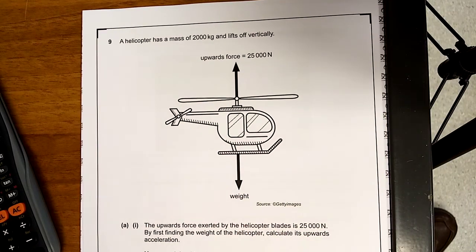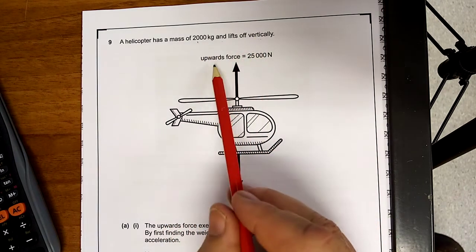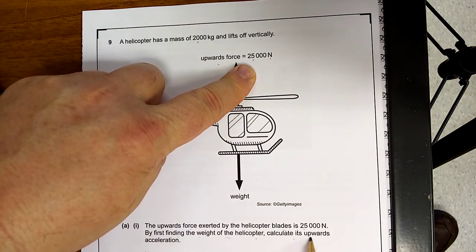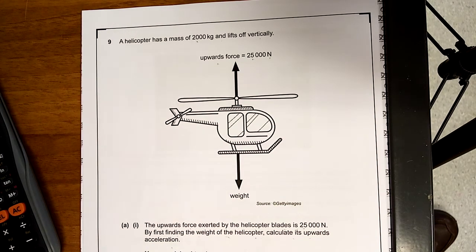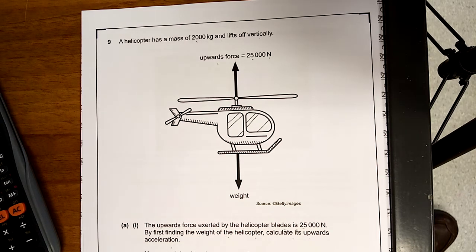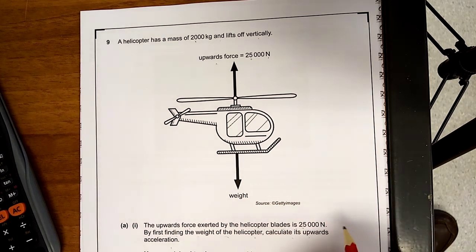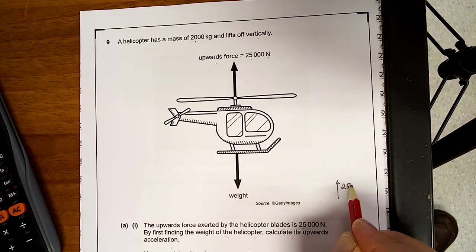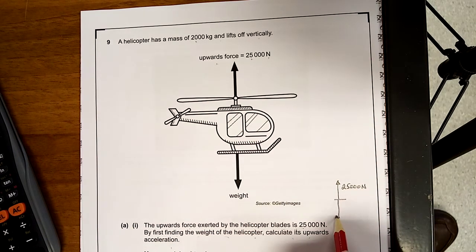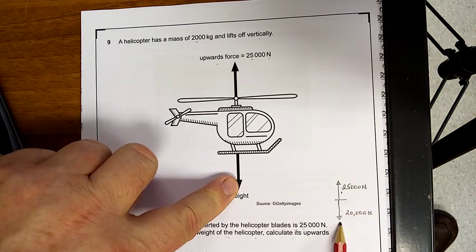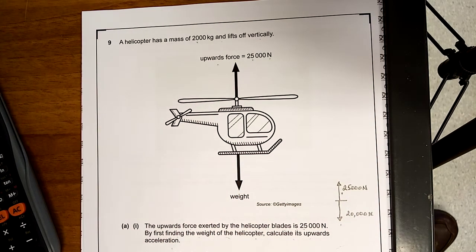Question number 9. A helicopter has a mass of 2000 kilos and lifts up fairly. So, the upward force is 25,000 newtons up. The upward force exerted by the helicopter blades is 25,000. By force finding the weight of the helicopter, calculate the upward acceleration. Weight is equal to mass by G. So, the weight is 2000 by 10, which is 20,000 newtons pulling it down. I have 25,000 newtons pulling it up and I have 20,000 newtons pulling it down. So, the weight is 20,000 newtons.